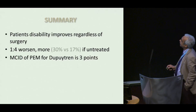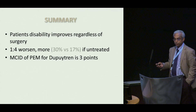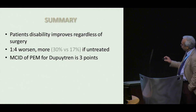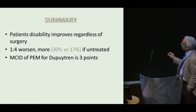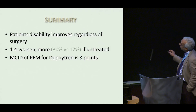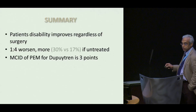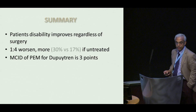To summarize: patients' disability improves regardless of surgery. Surgery gives three times the amount of improvement compared to natural history if you did nothing. One in four will worsen overall — and we're talking about those operated. I do not know the equivalent data for collagenase, but I do know some data for percutaneous needle fasciotomy. If you do not operate on them, one in three worsen with time, so two out of three do not worsen. If you operate, roughly one in five are worse than before. And if you're constructing a study using this as an outcome measure, you want to construct it around three points as the minimum clinically important difference. Thank you.